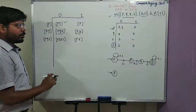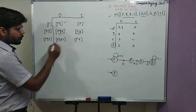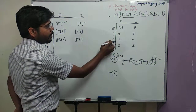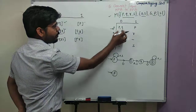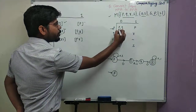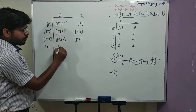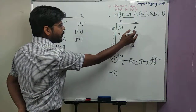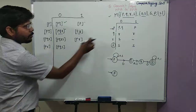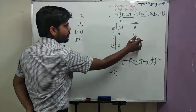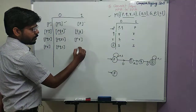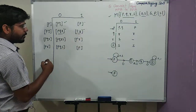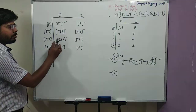We continue this process until no new states are generated. From state P,R: for input 0, from P we get P,Q and from R we get S, so collectively we have P,Q and S. For input 1 from state P,R: from P we get P and from R there is nothing, so we have only P. State P,R is now complete.